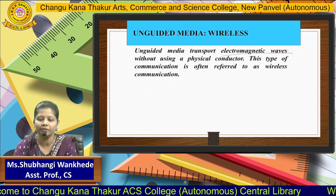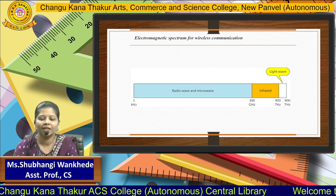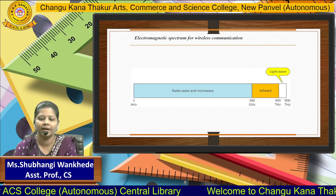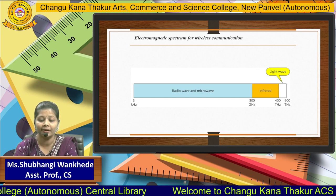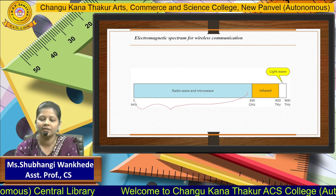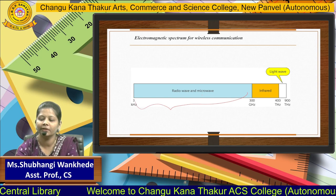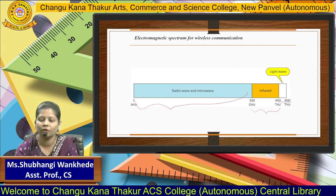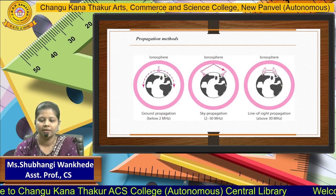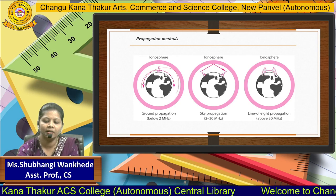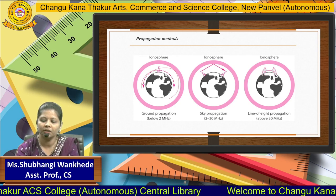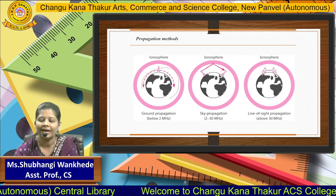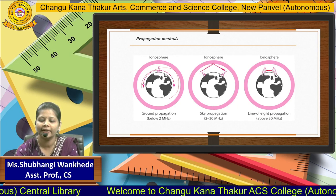Unguided media uses electromagnetic waves for transport. The electromagnetic spectrum used to send data wirelessly ranges from 3 kilohertz to 300 gigahertz for radio waves and microwaves, 300 gigahertz to 400 terahertz for infrared, and the rest is light waves. The propagation methods are: ground propagation (very near to Earth), sky propagation (using reflection via the ionosphere), and line-of-sight propagation.